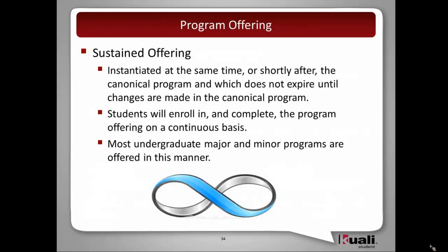A sustained offering is substantiated at the same time or shortly after that of the canonical program, and it does not expire until changes are made in the canonical program. So if there is a change in the completion requirements, for example, that constitutes a change in the canonical program and would result in a new offering. This information gets used down the line through any of the degree audit procedures or programs, to know which catalog the student is responsible for or which requirements they need to satisfy.